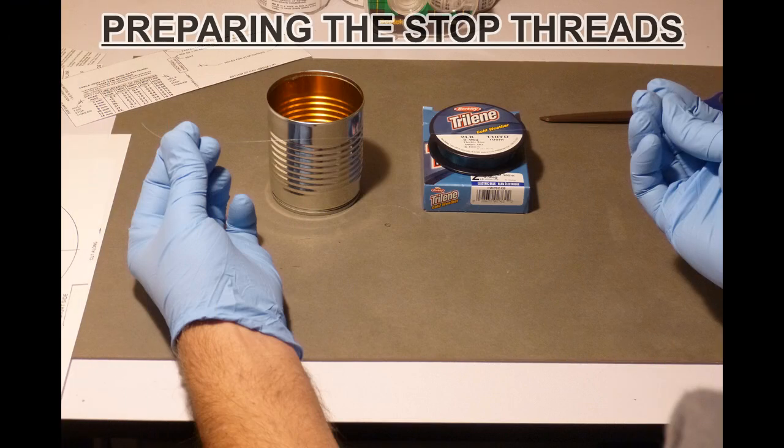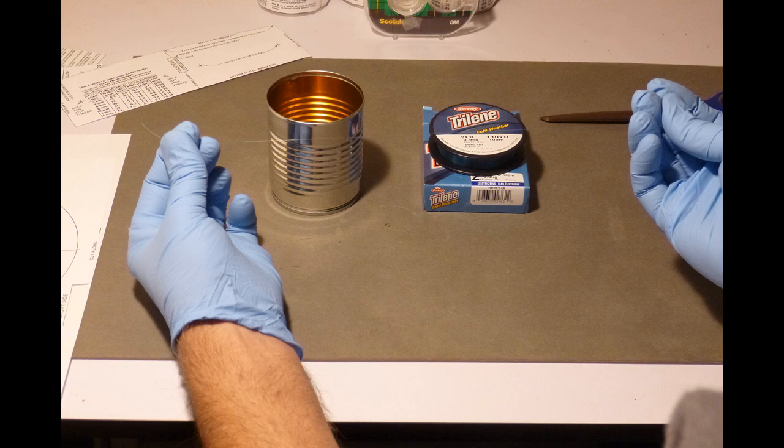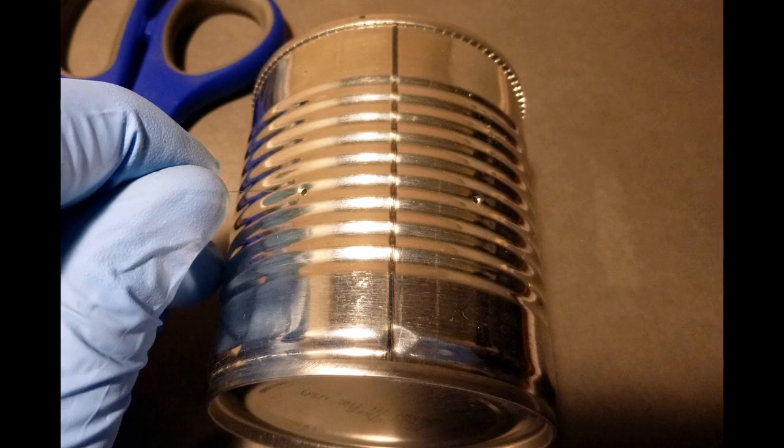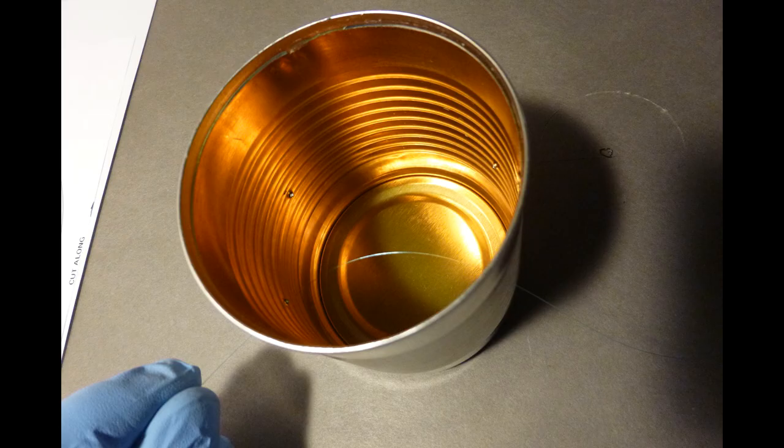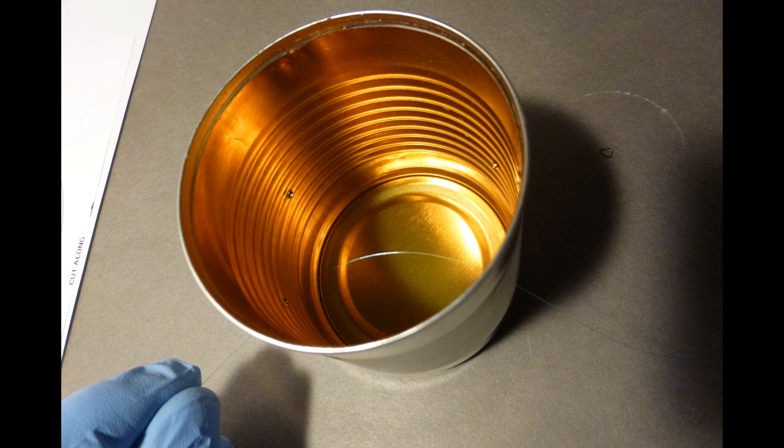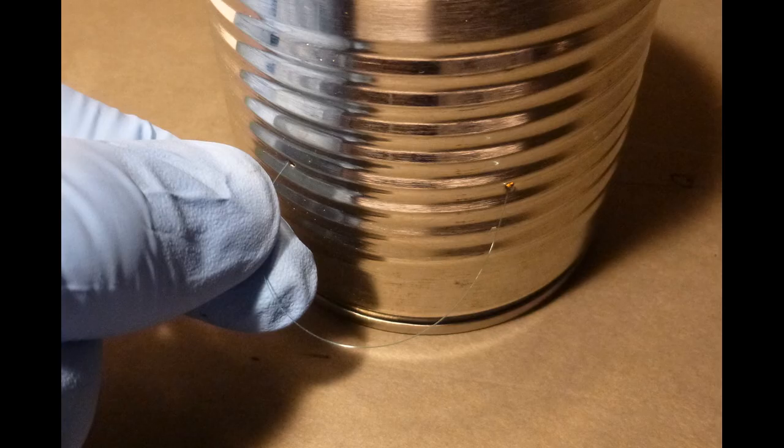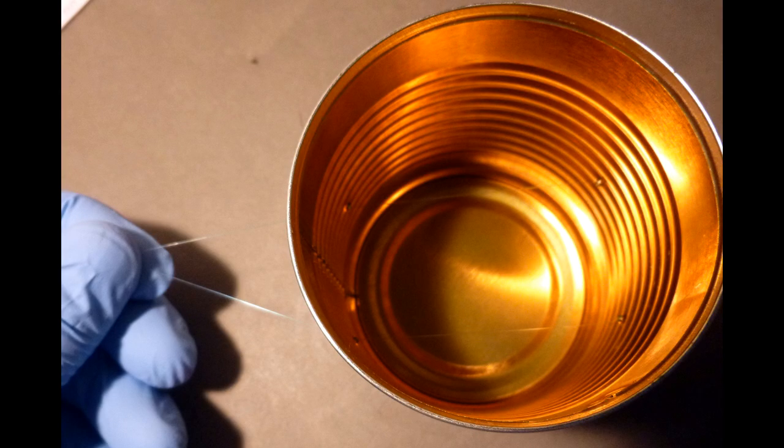To prepare the stop threads, put on the clean vinyl gloves and remove 14 inches of 2-pound fishing line. Thread it through a hole, pull it into the can, and thread it through the hole that is across from the first hole. Then push the line through the hole that is 1 and 1/4 inches away back into the can, then out the hole that is across from it, making a loop. The lines inside the can should be parallel to each other.